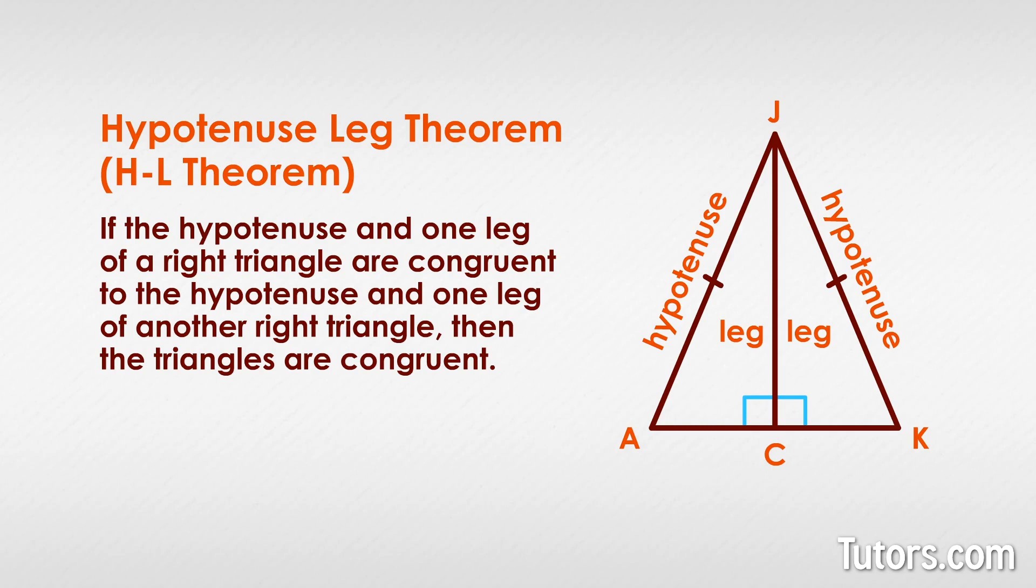Now, verify that AC is congruent to CK and all the interior angles are congruent. AC is congruent to CK because the altitude of the base of an isosceles triangle bisects the base, since it is by definition the perpendicular bisector. Angle JCA is congruent to angle JCK because they are both right angles. Angle A is congruent to angle K because they were angles opposite to the legs in accordance with the isosceles triangle theorem.